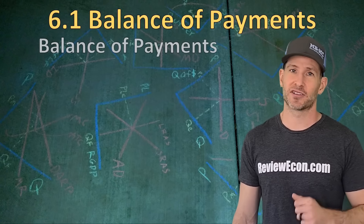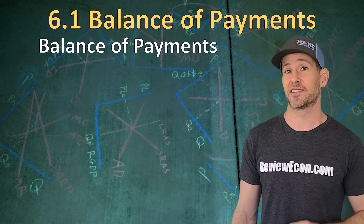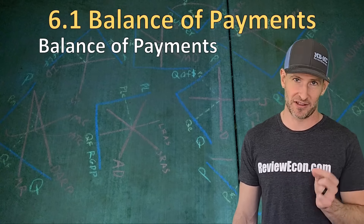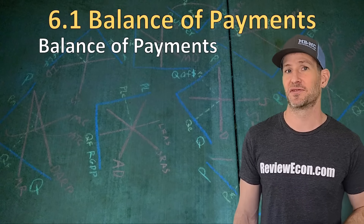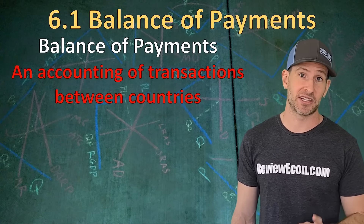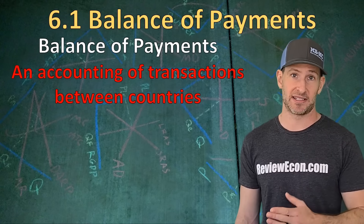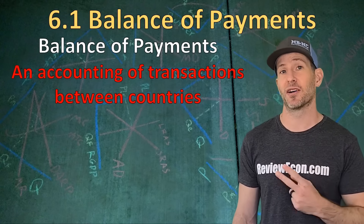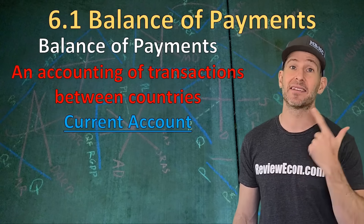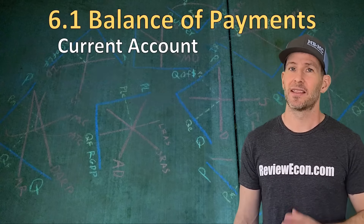The first topic we need to know for this unit is called the balance of payments. It has a lot of moving parts in it, but it's not too bad if you look at each one individually. The balance of payments is an accounting of transactions between countries. It has two parts: the current account and the capital and financial account.